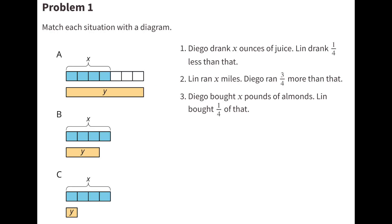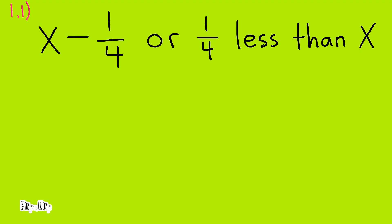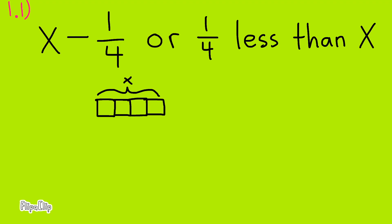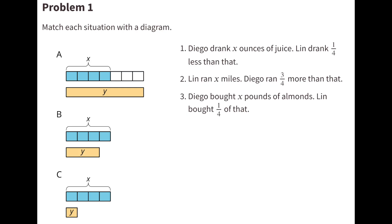Number 1. Match each situation with a diagram. X minus 1 fourth or 1 fourth less than X. This represents X and below it represents 1 fourth less than X. This diagram represents X and 1 fourth less than X. Match one of these diagrams with X and 1 fourth less than X.